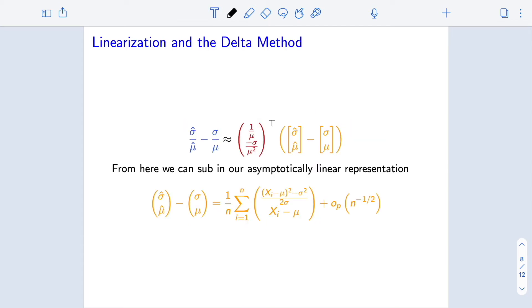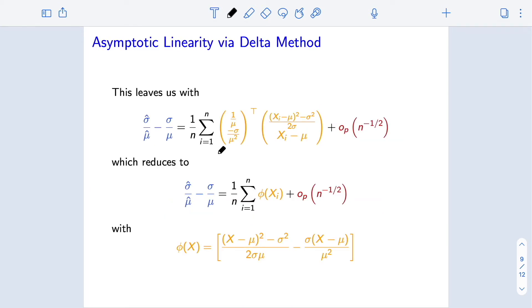So now we can plug in our asymptotically linear representation for this difference up into this linearization. And again, if we want this to be an equality rather than an approximation, we could actually put in a little op n to the negative one half. That would be fine. We still substitute this in up here. And what do we get? That leaves us with this really nice representation. So this says estimator minus parameter is an empirical average of these terms plus something that's asymptotically negligible, asymptotically converges to zero faster than n to the negative one half.